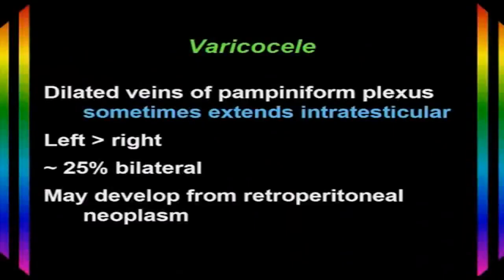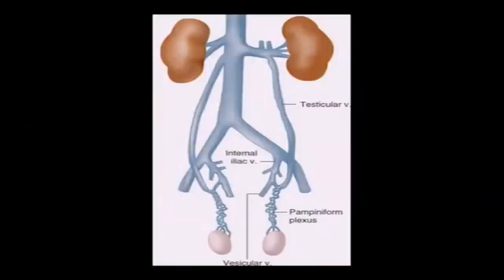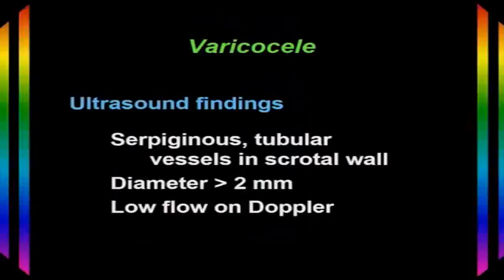Varicoceles are dilated veins of the pampiniform plexus. They're more common on the left than the right, but bilateral in 25% of cases. They may develop from a retroperitoneal neoplasm obstructing venous return. The pampiniform plexus drains into the testicular vein — on the left into the left renal vein, and on the right into the inferior vena cava. This is why a retroperitoneal tumor may cause a varicocele by compressing the testicular vein. The ultrasound finding is serpiginous tubular vessels in the scrotal wall.